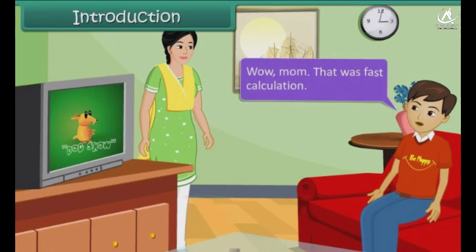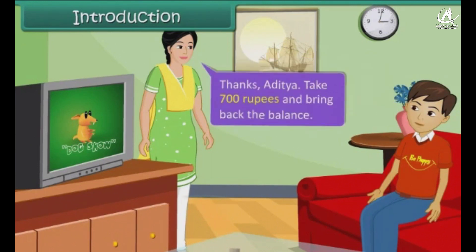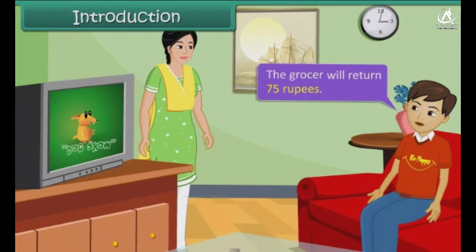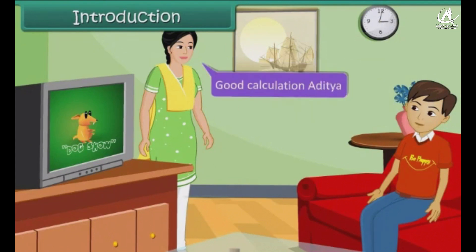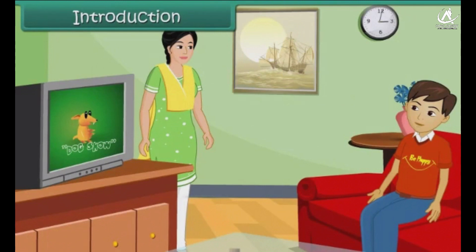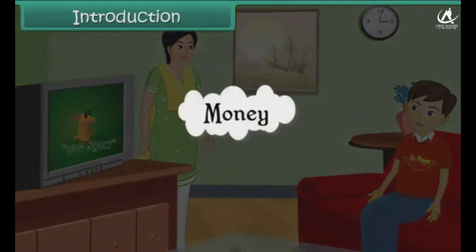Wow, mom. That was fast calculation. Thanks, Aditya. Take 700 rupees and bring back the balance, okay? Yeah, I know. The grocer will return 75 rupees. Good calculation, Aditya. In this lesson, you will learn about money.